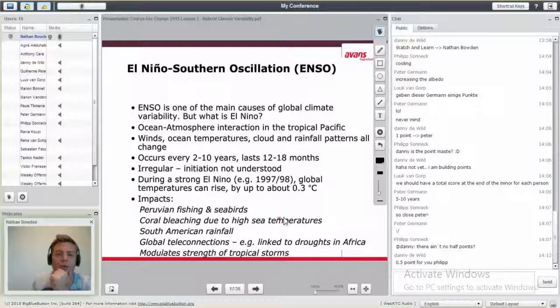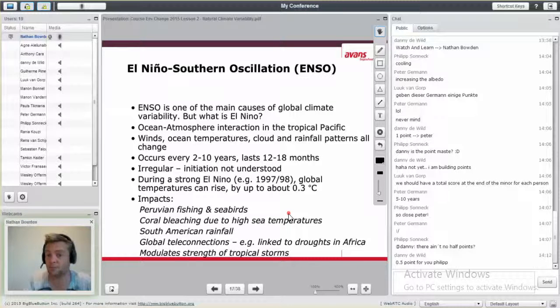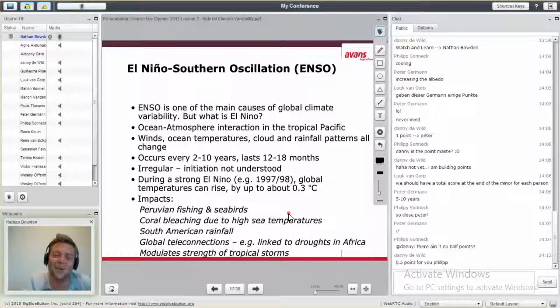Now to El Niño, La Niña. It's called the Southern Oscillations, or ENSO. ENSO is one of the main causes of global climate variation. It's larger than the North Atlantic Oscillations. El Niño is an ocean-atmosphere interaction. Winds, ocean temperatures, and cloud-rainfall patterns all change during the El Niño and La Niña years. It also has a cyclical cycle, sometimes two years, sometimes ten years. It lasts a year to a year and a half. It's irregular. We don't understand why, to be honest. Strong El Niños can raise global temperatures by about 0.3 degrees Celsius. So this is quite a large phenomenon. It's larger than volcanoes.